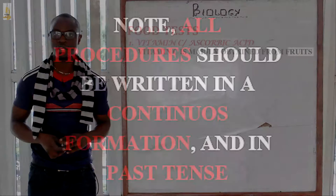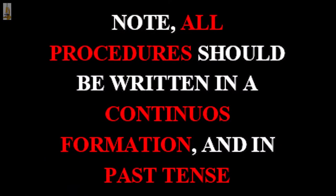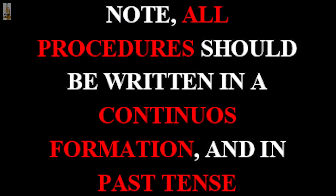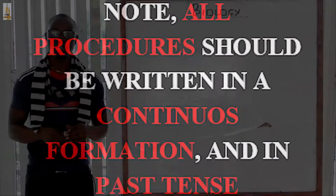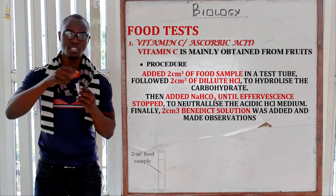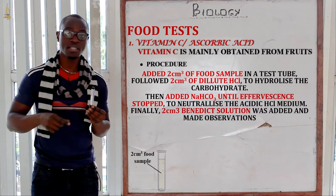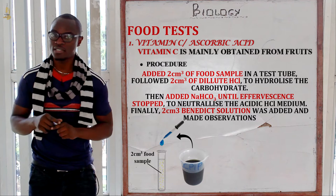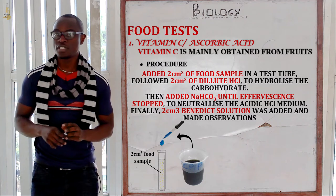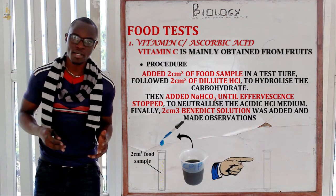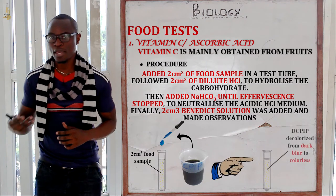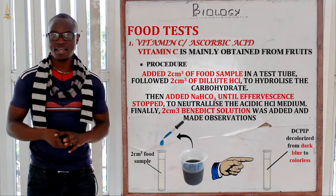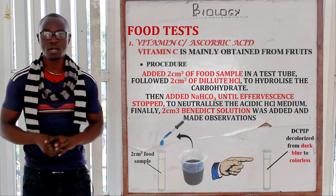So how will you test for vitamin C? You take the food sample, put it into the test tube, and then you add a few drops of DCPIP. If vitamin C is present, the purple colour of DCPIP will change from purple to colourless. That is the test for vitamin C.